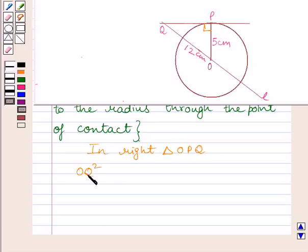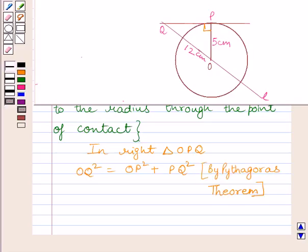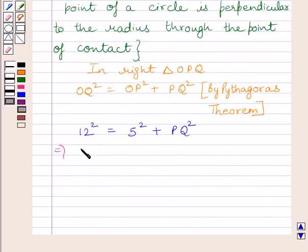Now, we know OQ is equal to 12 cm and OP is equal to 5 cm. Substituting corresponding values of OP and OQ in this expression, we get 12 square is equal to 5 square plus PQ square. This implies 144 is equal to 25 plus PQ square.